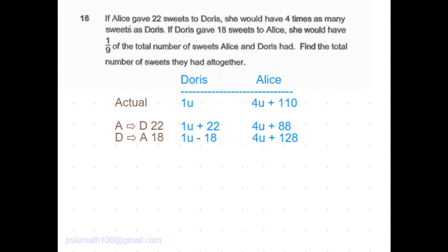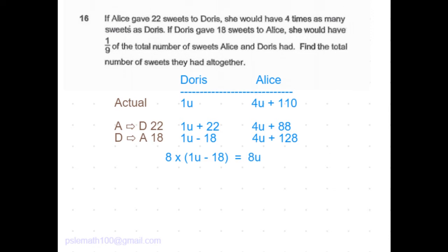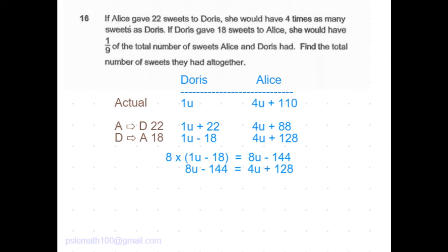Now Alice has eight times as many sweets as Doris. So eight times of Doris is eight times of 1u minus 18, which is 8u minus 144. Now 8u minus 144 is equal to what Alice has, which is 4u plus 128.